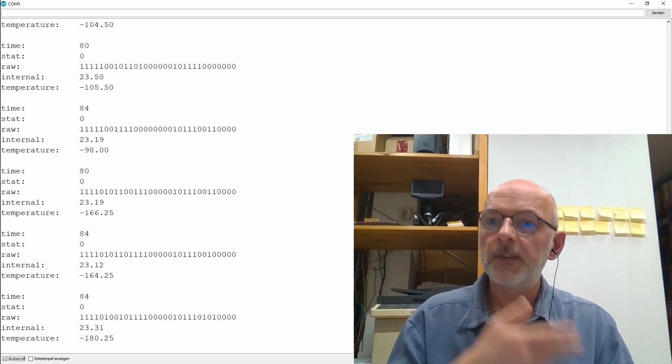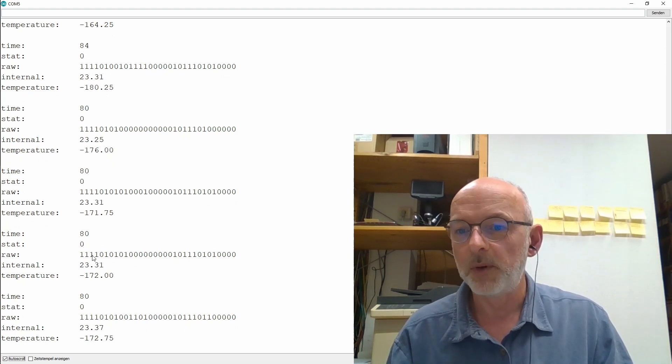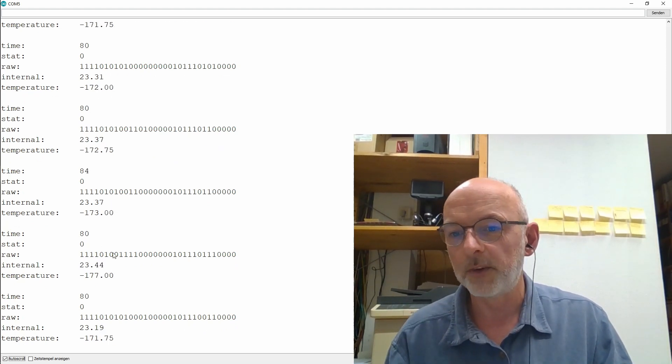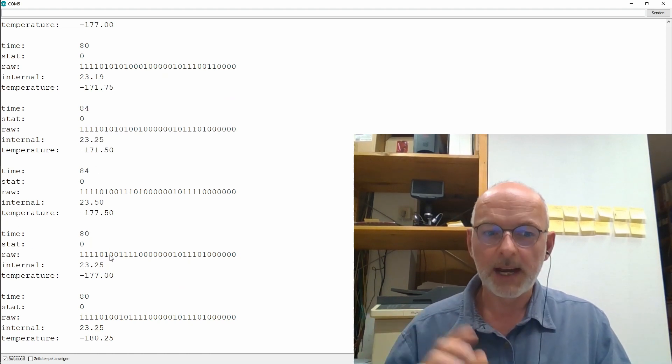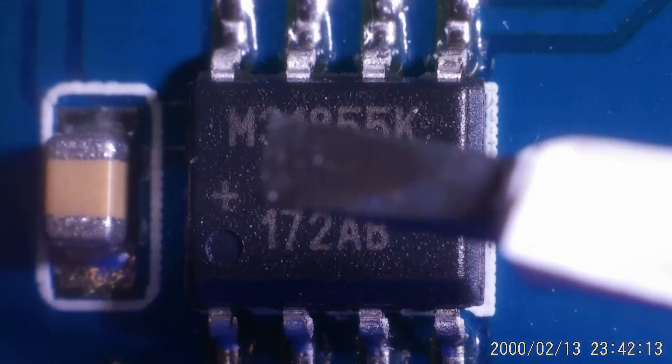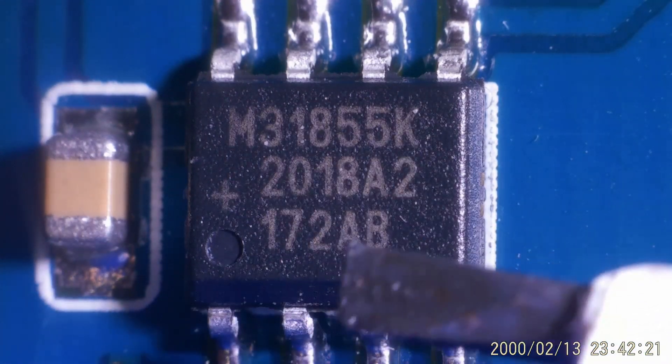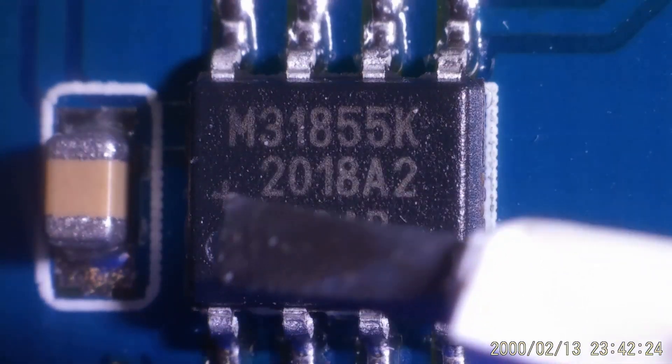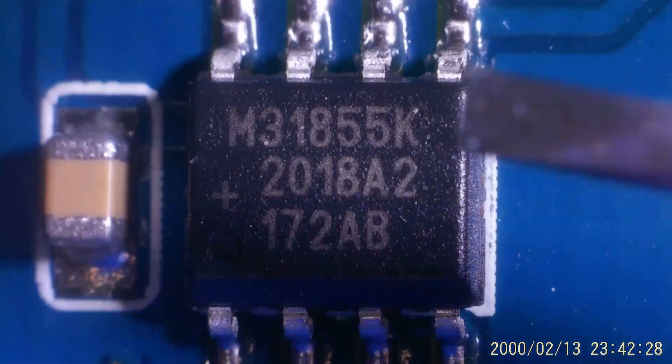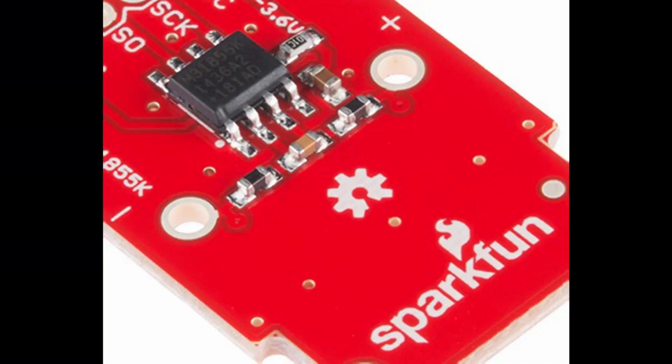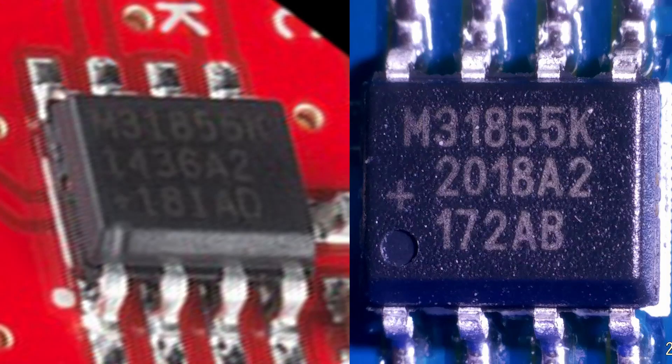That's the problem with these fake chips. They simply seem to have hard-coded an error. The first bits, they are just one all the time. Now you see the markings on the chip very clearly here under the microscope. It's M31855K, 2018 A2172AB, and there's a small plus here and a pin one marker. I tried to find a nice picture of an original Max 31855K, but the only thing I could find was this product picture from SparkFun where you can almost make out the markings.